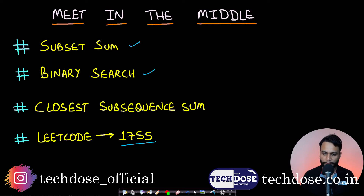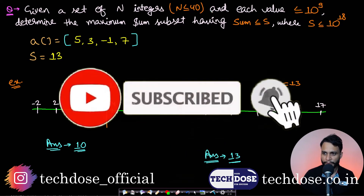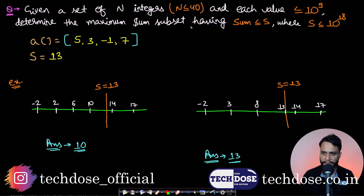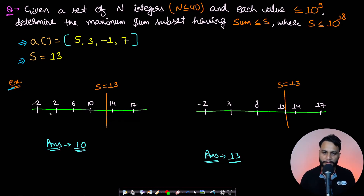Now let us look at the problem statement. In this problem, given a set of n integers where n is less than or equal to 40 and each value is less than or equal to 10 to the power 9, determine the maximum sum subset having sum less than or equal to S, where S is less than or equal to 10 to the power 18. Let's say we are given an array — in this case I have taken four elements and given sum value 13. What this problem is asking is we have to generate a subset whose sum will be as close as possible to S but should never exceed S.